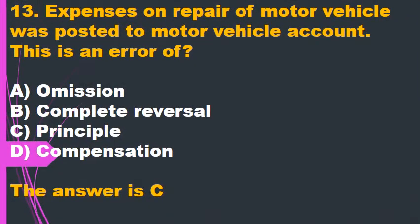Question 13. Expenses on repair of motor vehicle was posted to motor vehicle account. This is an error of: A. Omission. B. Complete reversal. C. Principle. D. Compensation. The answer is C.